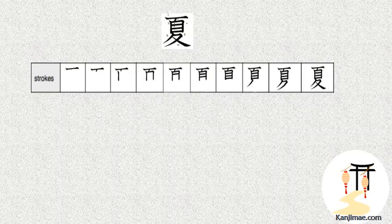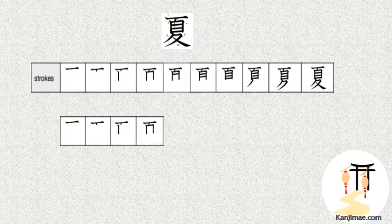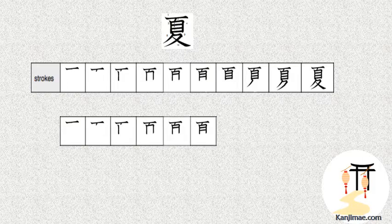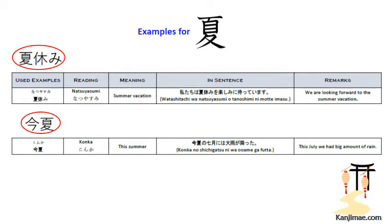Now stroke orders and examples. First example is Natsu yasumi, which means summer vacation. Second example is Konka, which is a way of saying this summer.